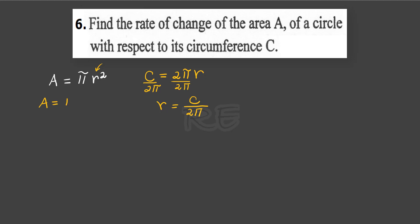We will go back to the formula A is equal to pi r squared and we replace r by C over 2 pi.